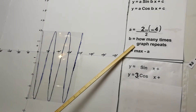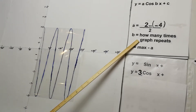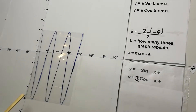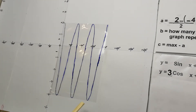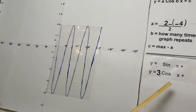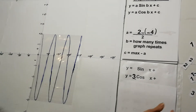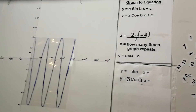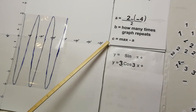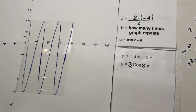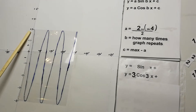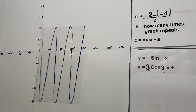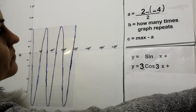The b value is how many times the graph touches the bottom — in this graph it touches the bottom 3 times, so b = 3. For the c value: the maximum is 2 and we subtract the a value of 3, giving 2 − 3 = negative 1.